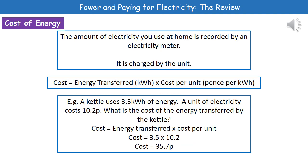The third calculation flows very nicely from the second, and this is to work out the cost of the energy. In your home you will have an electricity meter that records how much electricity you're using, and the electricity company charges you by the unit. The calculation is: cost equals the energy transferred times the cost per unit.